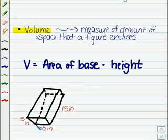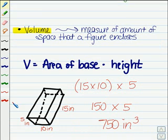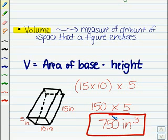The area of our base here would be length times width, 15 times 10, which is going to be 150. Then we'll multiply that by our height, which is 5, giving us our final answer, 750 inches, but this time it's cubic inches when we work with volume.